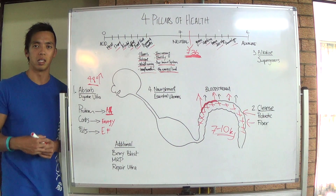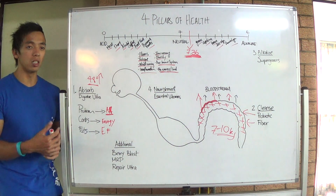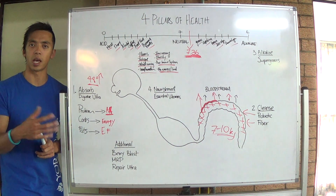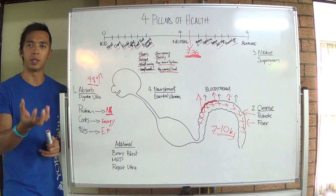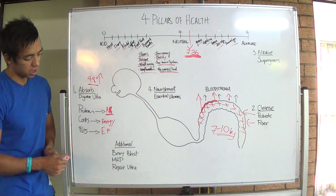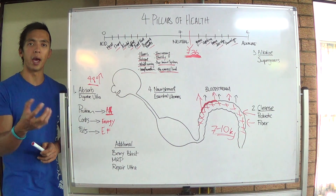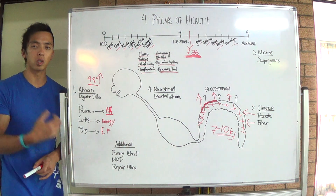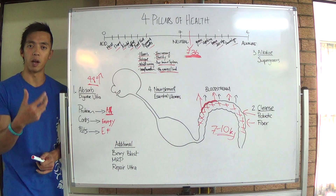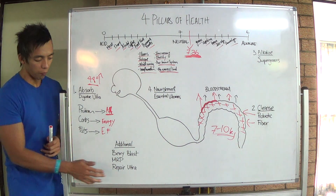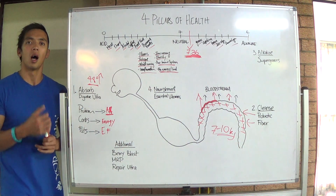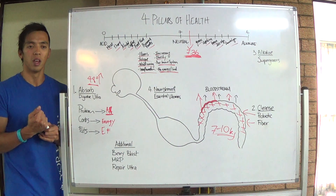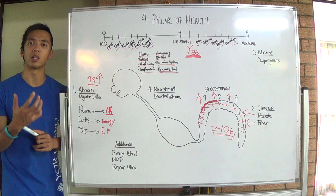The MRP is a meal replacement protein that guarantees absorption of the protein because it has digestive enzymes and a system called NDS. It basically guarantees all the protein is delivered into the blood. The Repair product is a very powerful antioxidant to help repair soreness after the gym, decrease inflammation, and help people recover from injuries. There are a lot of good testimonials from the Repair product — I highly recommend it if you have any injuries.